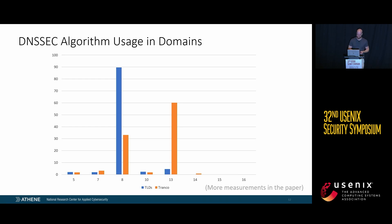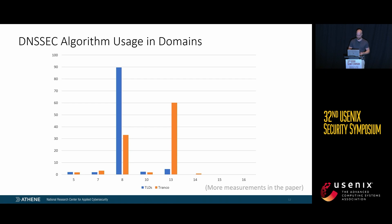On the domain side, the top-level domains mostly use algorithm 8, which is RSA-based. Among the protected Tranco top 1 million domains, algorithm 8 and also ECDSA-based algorithm 13 are prominently used. More measurements can be found in the paper.